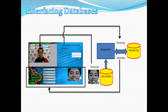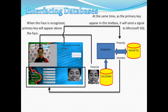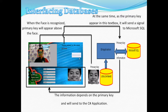Here it shows how the C-Sharp application interacts with the two databases and the relation of the local database to Microsoft SQL. When the face is recognized, a primary key will appear above the face and at the same time in the text box. The C-Sharp application will pull out the information from the Microsoft SQL by means of the primary key, where the information depends on the primary key shown in the text box.